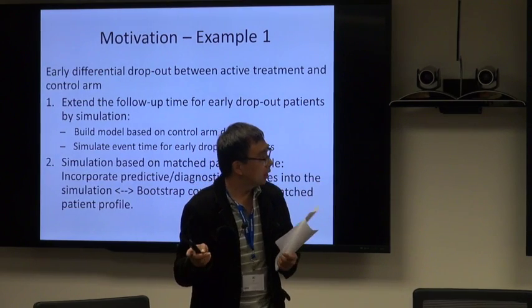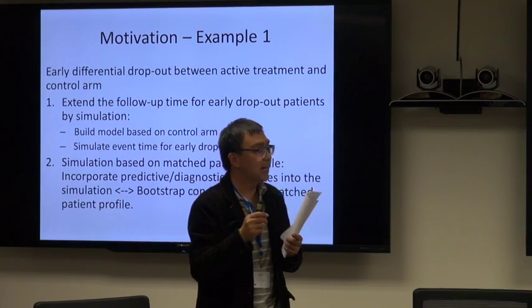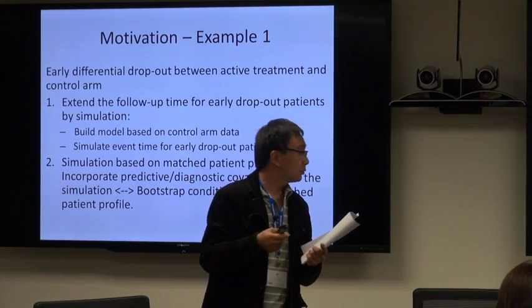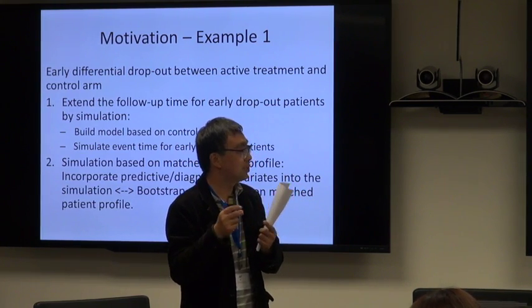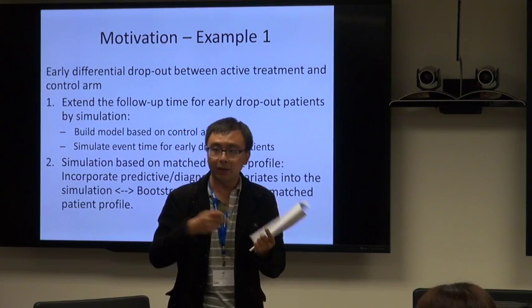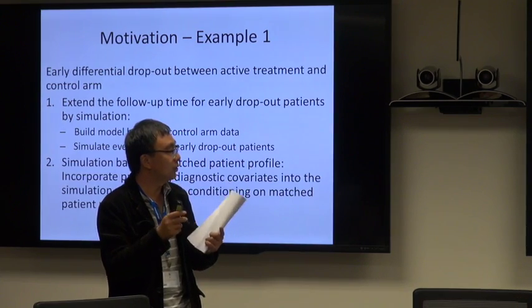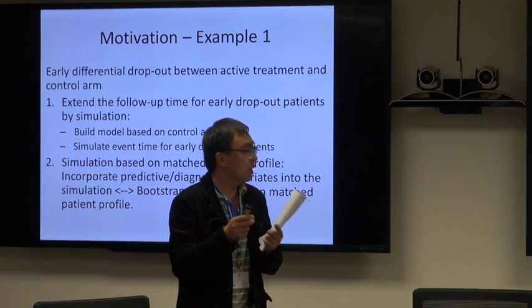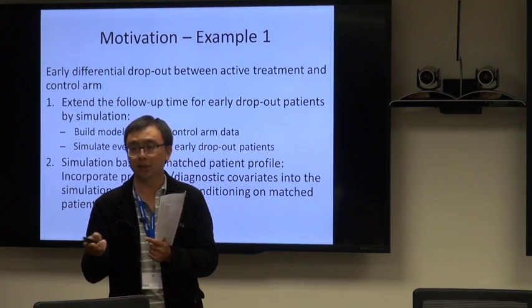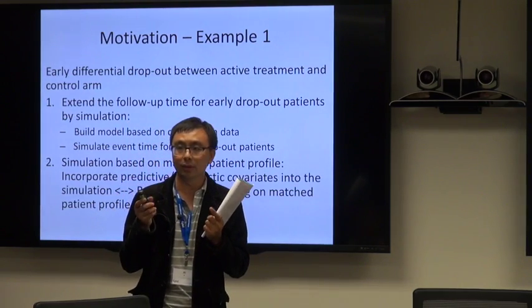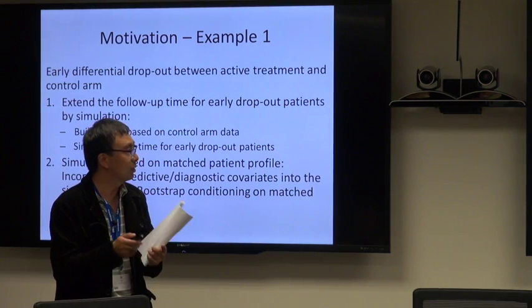Intuitively, for better simulation, we want the bootstrap to be conditioned on matched patient profile. That is, for each early dropout patient, we want his replacement to share similar patient profile. Going back to our parametric approach, by incorporating covariates into the simulation, what our macro does is actually a parametric version of the bootstrap with matched patient profile. So that's why incorporating the covariates into the parametric simulation is important.